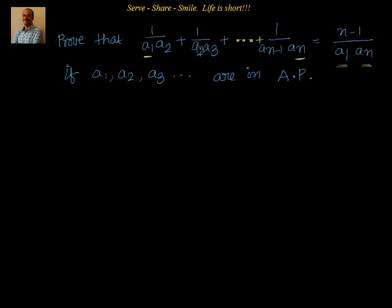That means the remaining all, a2, a3, a4, all of them should be cancelled out. So, how I can cancel them?